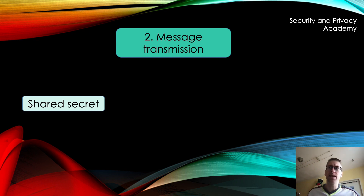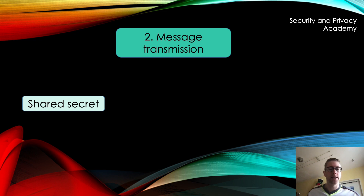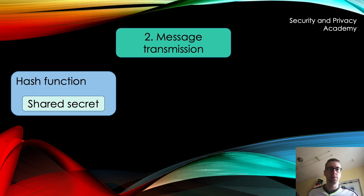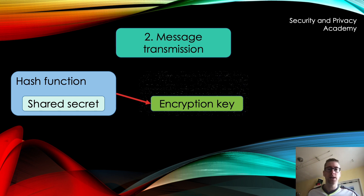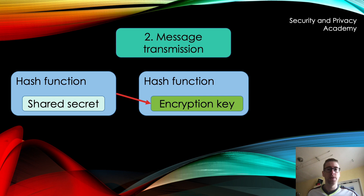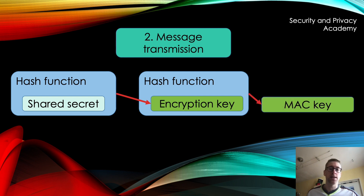The keys are calculated from a shared secret, which is exchanged via Diffie-Hellman. A hash function is applied to the shared secret, and the result is the encryption key used to encrypt messages. Next, this symmetric key is also hashed, and the result is the MAC key.